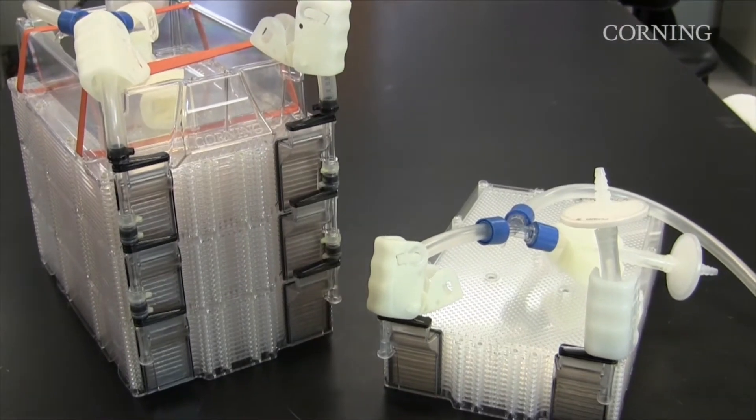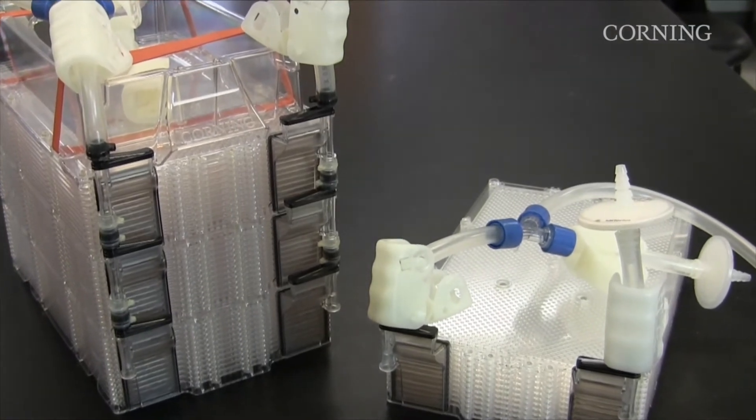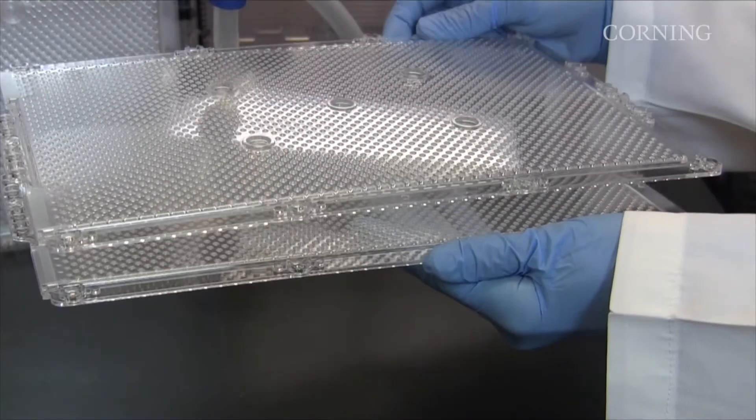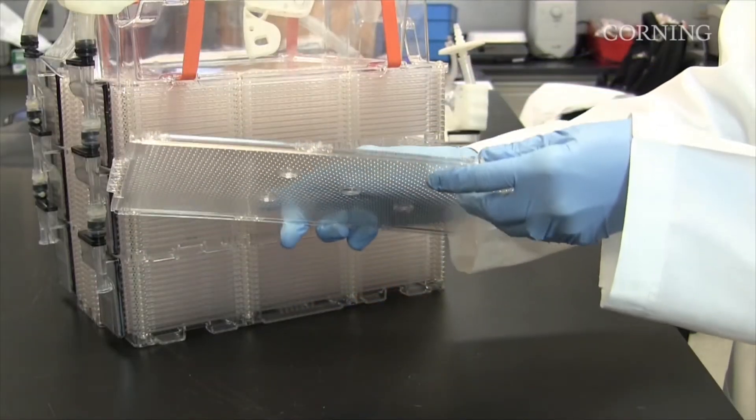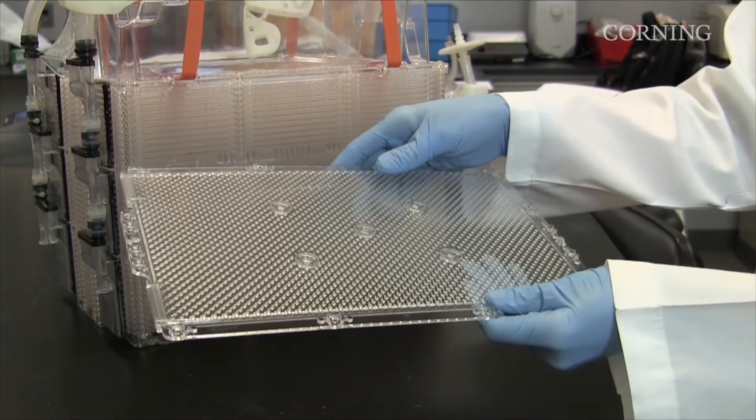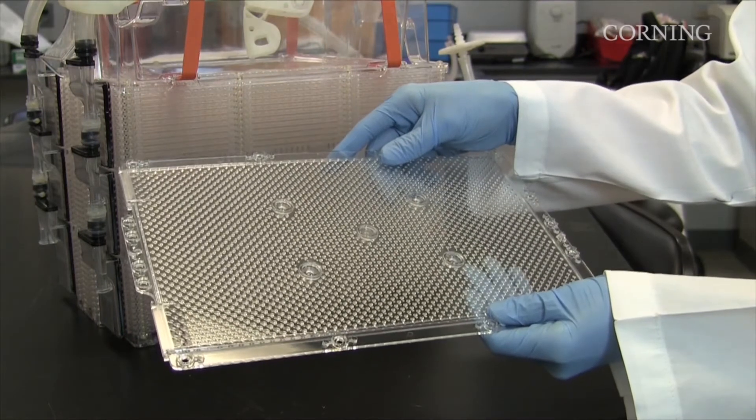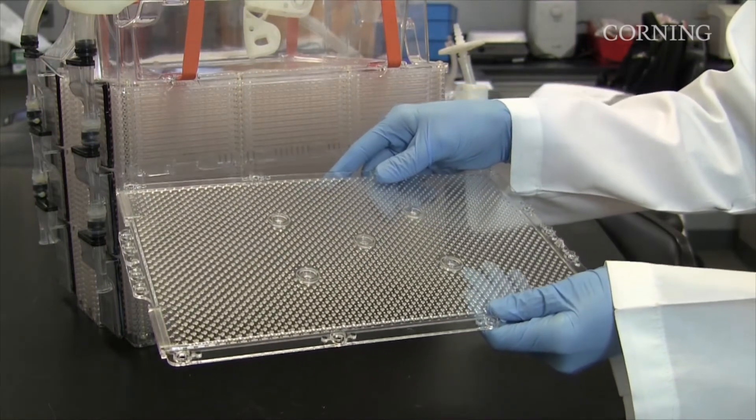Before we demonstrate the procedure, let's review the components of the HyperStack vessel. The stackette is the individual cell culture chamber. It is comprised of a top plate and gas-permeable film. Each stackette has a total of 500 square centimeters of growth area.